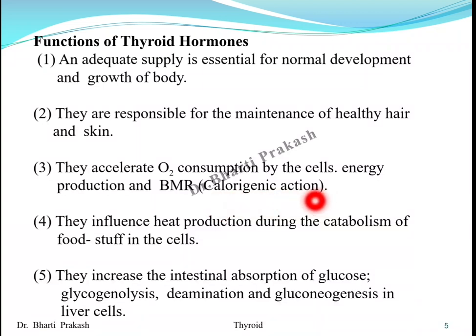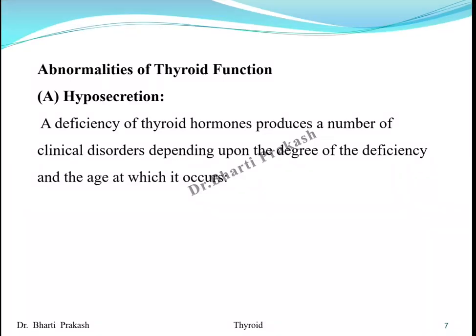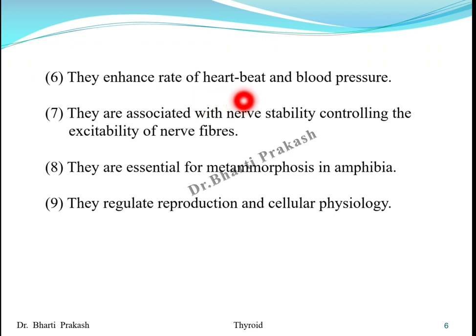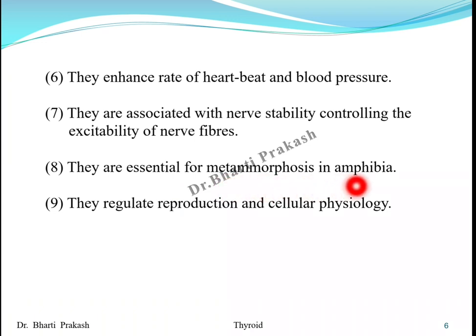They influence heat production during the catabolism of foodstuffs in the cells, and they also increase intestinal absorption of glucose, glycogenolysis, deamination, and gluconeogenesis in liver cells. They enhance the rate of heartbeat and blood pressure, are associated with nerve stability, and control the excitability of nerve fibers. The thyroid hormones are also essential for metamorphosis in amphibians and regulate reproduction and cellular physiology.